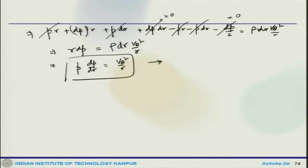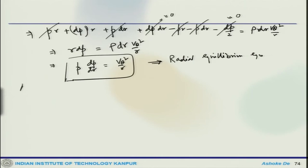What we get is: 1 by rho times dP by dR equals V_theta squared by R. That is the radial equilibrium equation. The actual velocity distribution must satisfy this condition, which is very important.